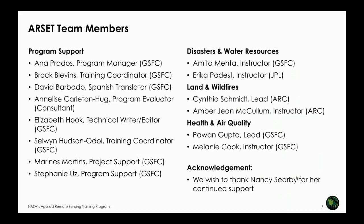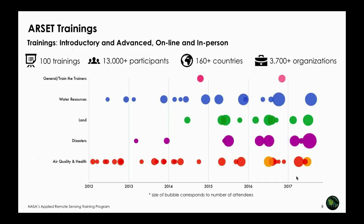ARSET provides trainings in thematic areas such as air quality, water resources, disasters management, and ecosystems and land management. Team members are scattered at different NASA centers — here at Goddard, at Ames in California, JPL, and also at Huntsville NASA Marshall Space Flight Center. ARSET trainings started in 2012, and since then over 100 trainings have been conducted with more than 13,000 participants from 106-plus countries, and more than 3,700 organizations have participated.